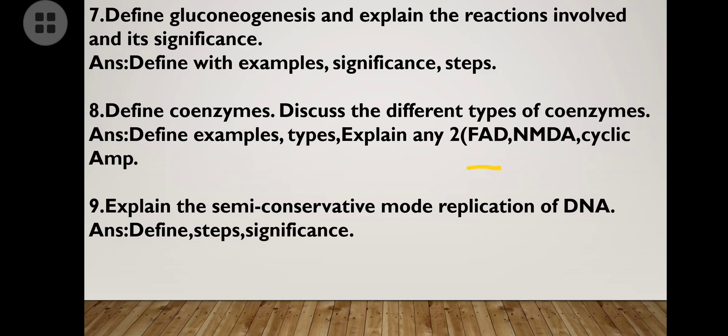Coenzymes and their types: if they ask about FAD, NAD, or cyclic AMP, you write those coenzymes. Define coenzymes, give examples and types, then explain any two that they ask. For example, write the full form of FAD, then its salient features or significance.